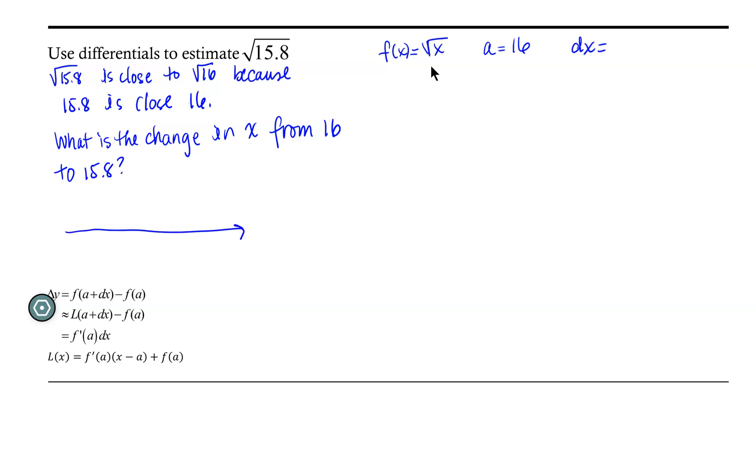Well, if we consider the x-axis, and we call this location 16, then 15.8 will lie to the left of 16, and so our differential, or our dx, will need to be negative because we're moving to the left. And so dx, or delta x, should be negative 0.2 units. So for our differential, dx is going to be negative 0.2.